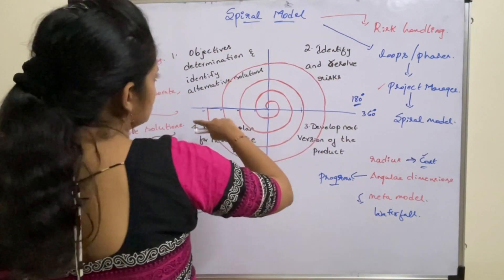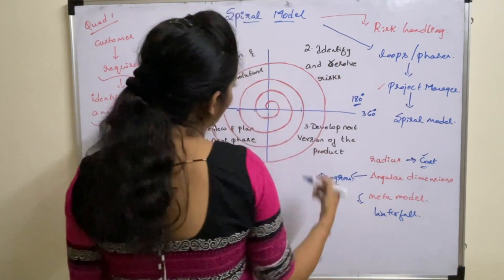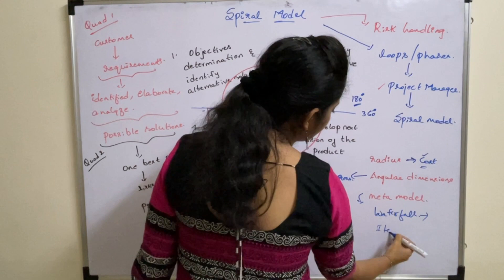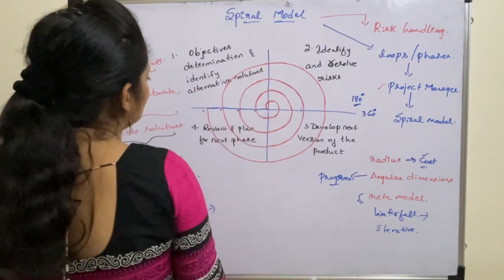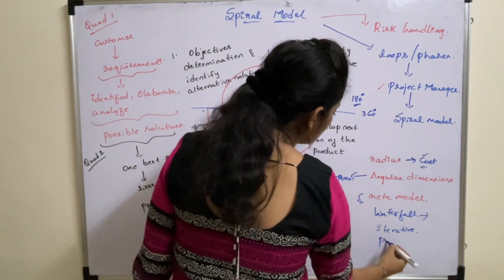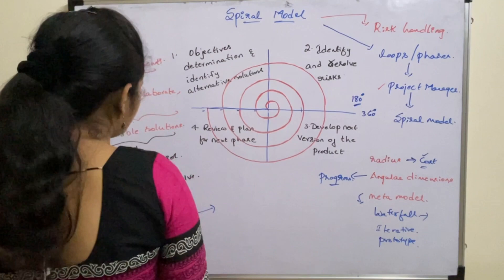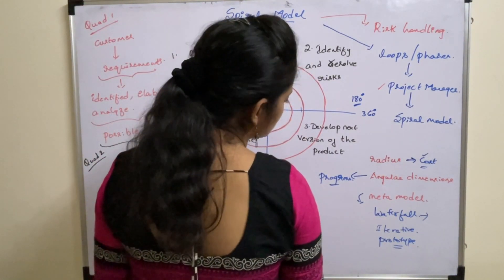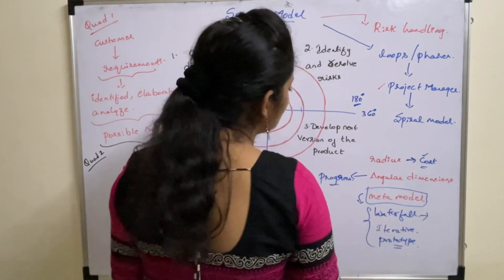This is why the spiral model is called a metamodel. All the quadrants are implemented one after the other sequentially, so it uses the waterfall model. It also has multiple iterations, so it uses the iterative model. A prototype is developed at the end of quadrant 2, so it uses the prototype model as well. Since it uses multiple models, the spiral model is treated as a metamodel.